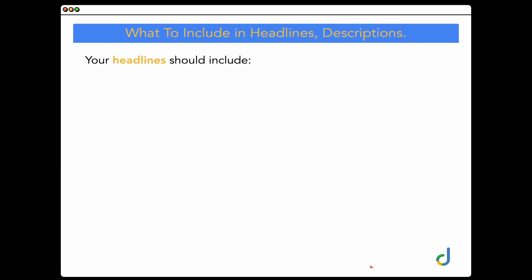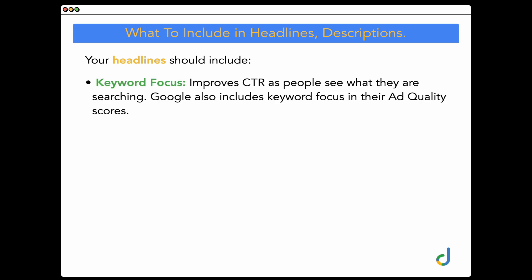The first key element your headlines need to include is keyword focus. Including the keywords from the user's search query in your headlines improves click-through rate because people see what they're searching for. Google also factors keyword focus into ad quality scores. This is the one thing people generally do get right — but the problem is that all 15 headlines end up being different variations of the keyword focus, with nothing else.